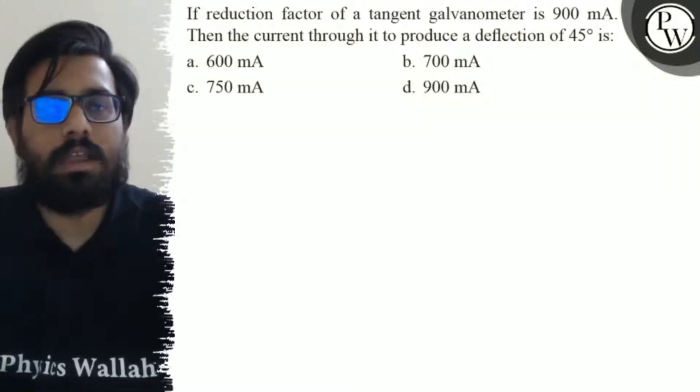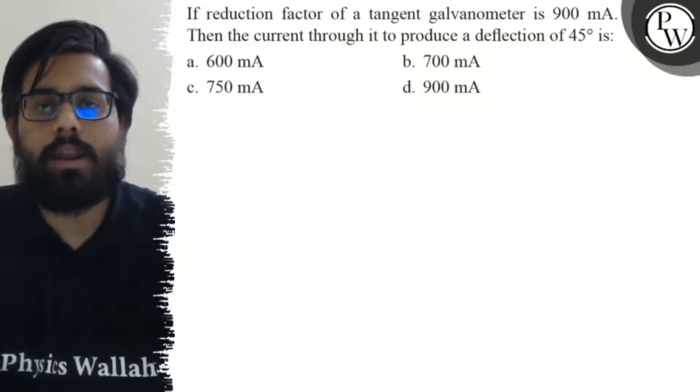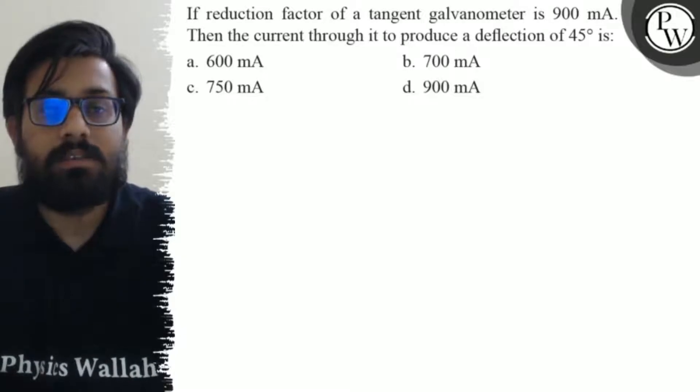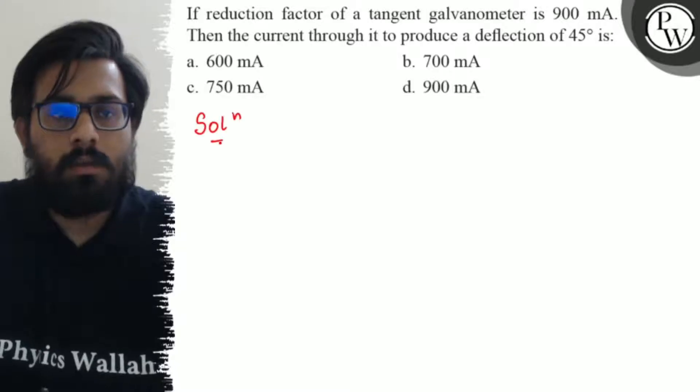Hello bachos, so let's see the question. If a reduction factor of a tangent galvanometer is 900 milliampere, then the current through it to produce a deflection of 45 degree is: first option is 600 milliampere, second option is 700 milliampere, third option is 750 milliampere, and the fourth option says 900 milliampere.